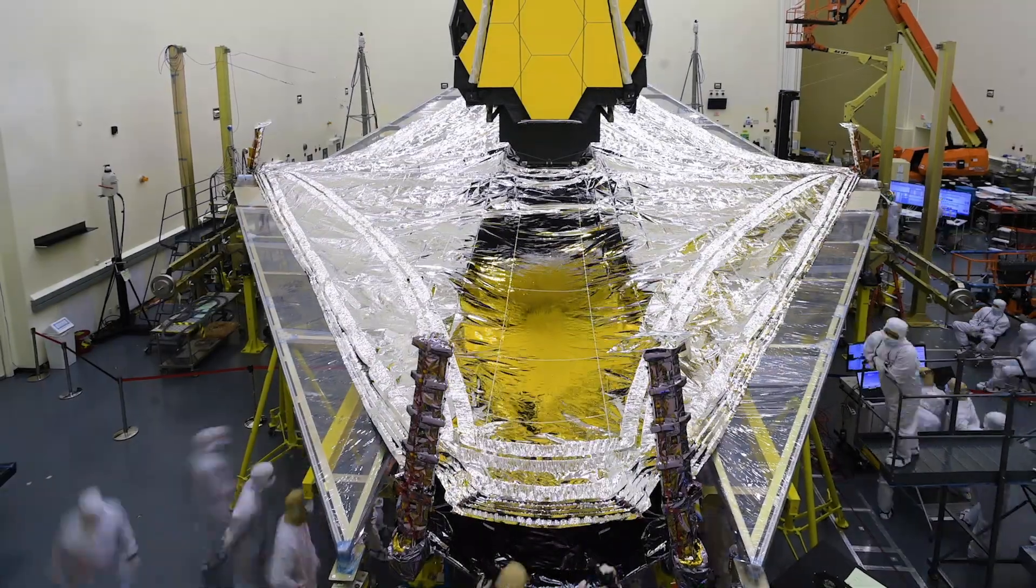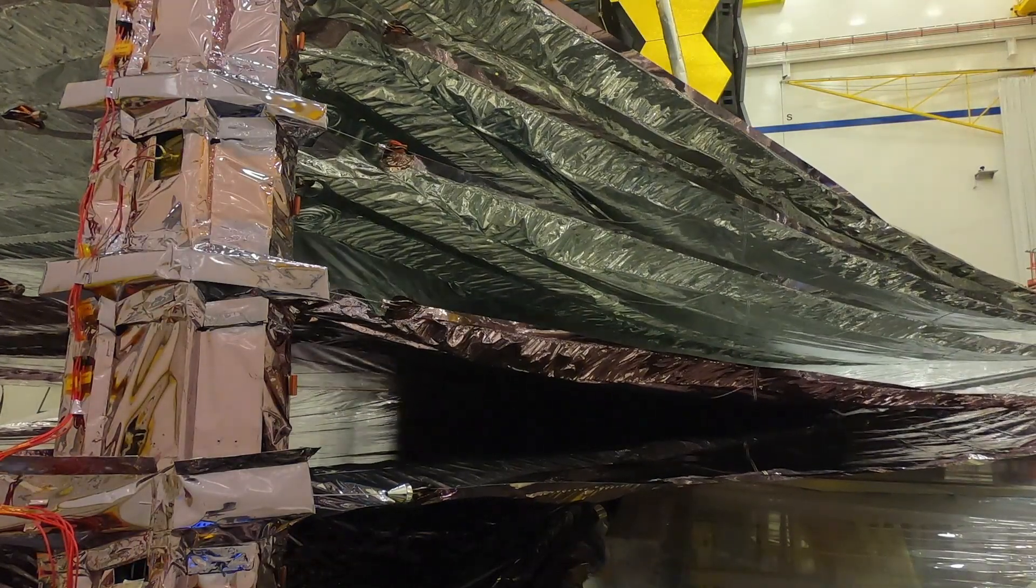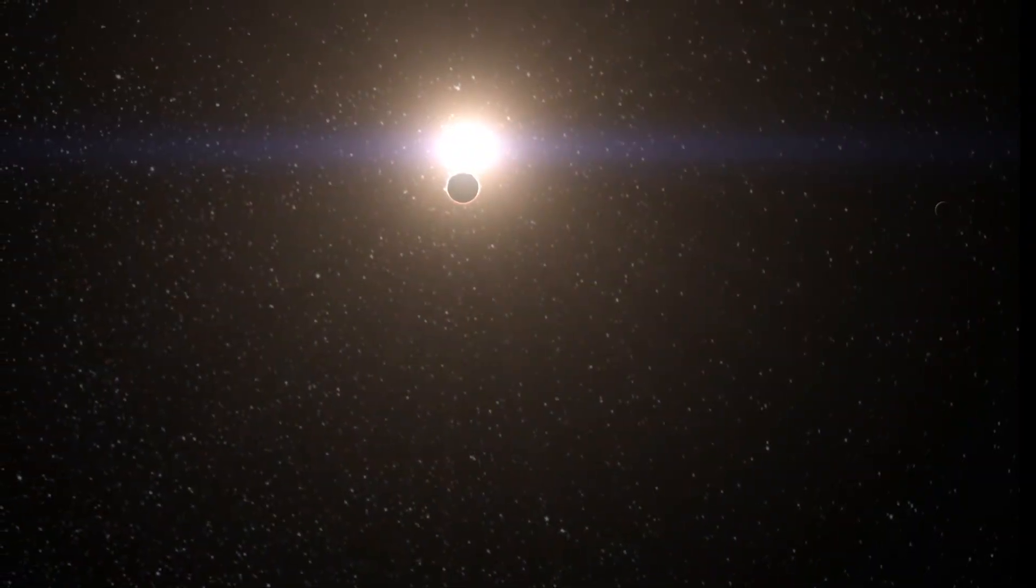Getting this cold is done with the help of the largest sunshield ever flown. A five-layer, tennis court-sized sunshield that blocks heat from the sun, earth, and moon.